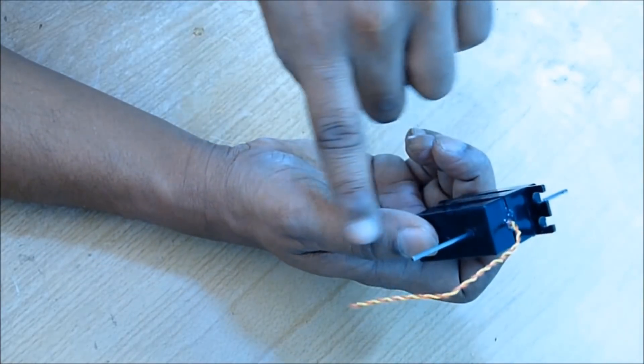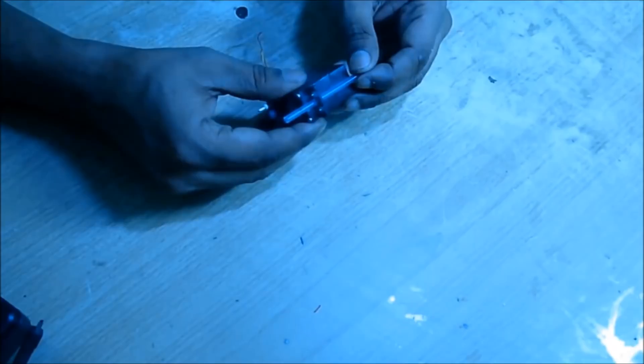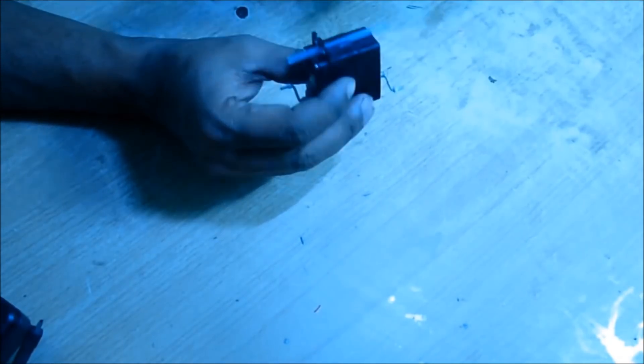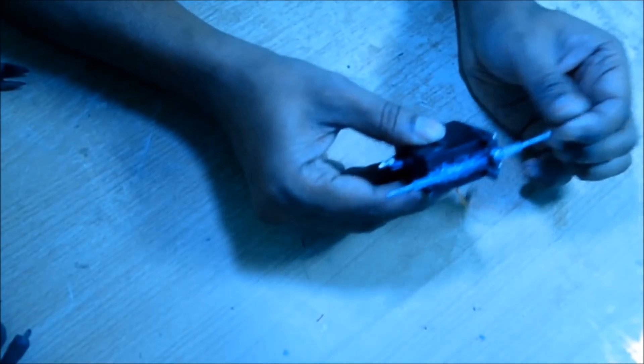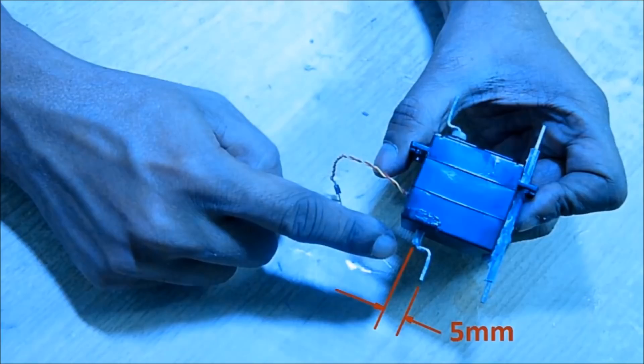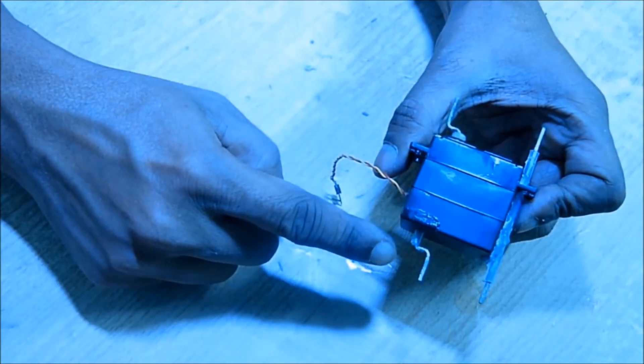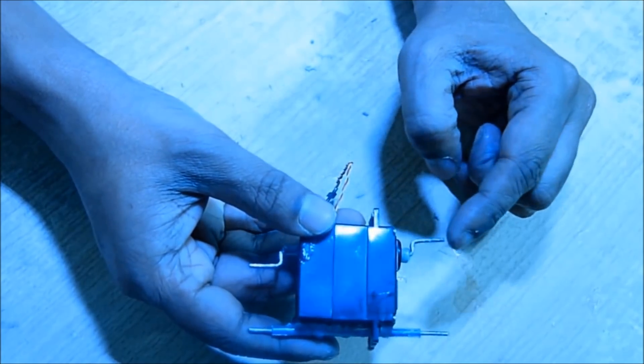Now on the top you have to glue a gel pen refill and then pass another iron wire to make a static shaft like this. Now the motor shaft, you have to bend like a bicycle pedal. This is a 5mm bend like this.